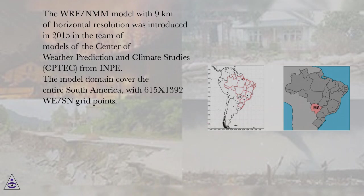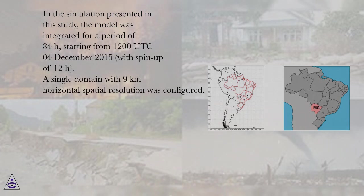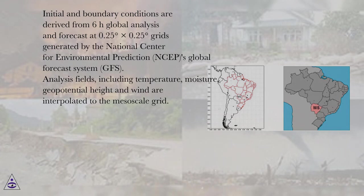The model domain covers the entire South America, with 615 by 1392 west/south grid points. In the simulation presented in this study, the model was integrated for a period of 84 hours, starting from 1200 UTC on December 4, 2015, with a spin-up of 12 hours. A single domain with 9 kilometers horizontal spatial resolution was configured. Initial and boundary conditions are derived from 6-hour global analysis and forecast at 0.25° × 0.25° grids generated by the NCEP Global Forecast System (GFS).